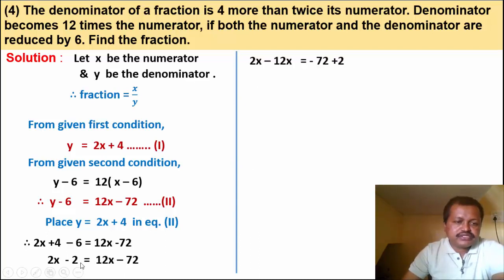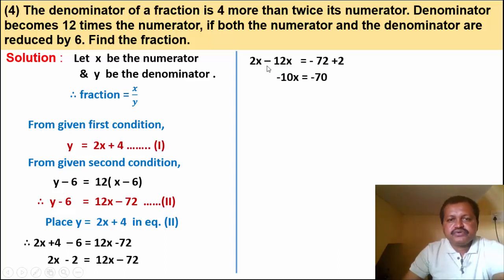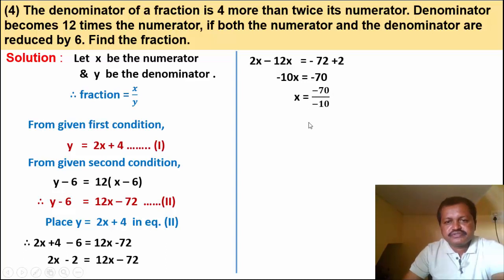Simplifying: take 12x to the left — 2x minus 12x equals minus 72, and minus 2 moves to the right as plus 2. So minus 10x equals minus 70, therefore x equals minus 70 upon minus 10, so x is equal to 7.